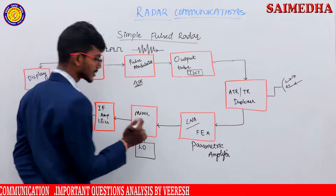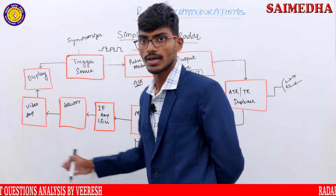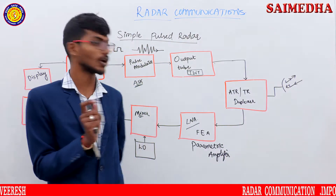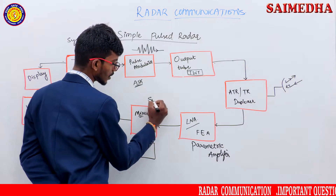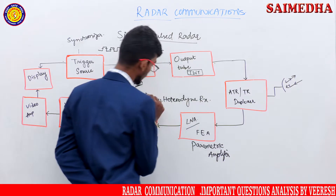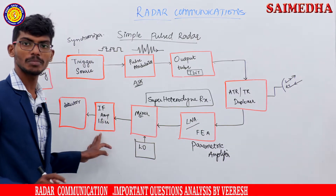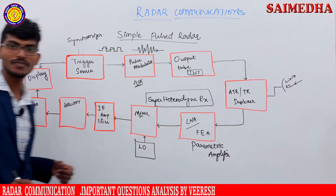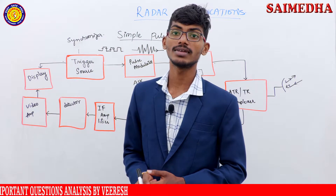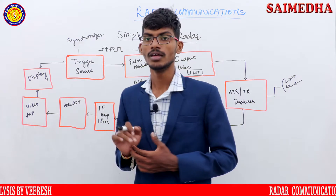After the LNA, the signal is sent to the mixer. The mixer is a main block of the receiver. In the simple pulsed radar, the receiver is a superheterodyne receiver. The superheterodyne receiver consists of: LNA amplifier, mixer, IF amplifier, video detector, and video amplifier. This superheterodyne receiver works under IF — Intermediate Frequency. The mixer in the simple pulsed radar receiver is always a down converter mixer.